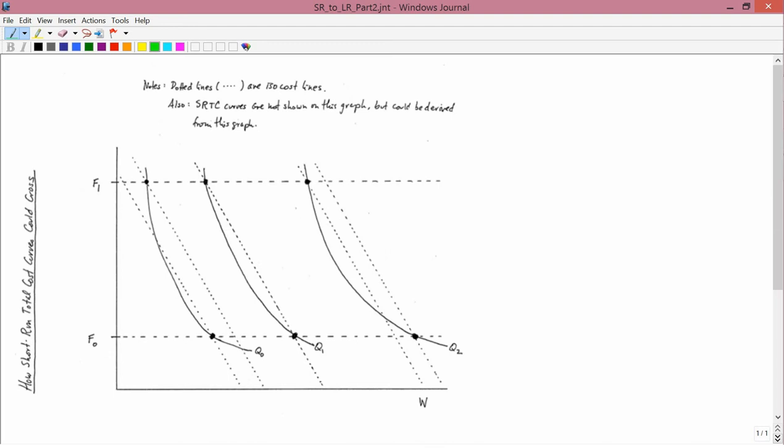So we're first going to assume, as is obvious from the isoquants, that Q0 is less than Q1, which is less than Q2. So that's the amount of corn. It's obvious because Q0 uses less water and fertilizer than Q1, which uses less water and fertilizer than Q2.